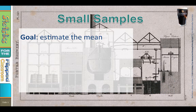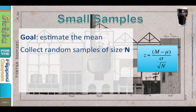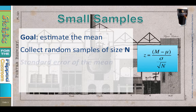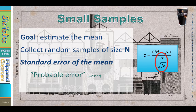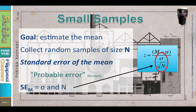Our goal is to estimate the mean. We're going to do this by collecting random samples, making sure that each sample is the same size. The mean of each sample is going to be off a little bit from its population mean. If we had plenty of time, we could measure thousands of samples, each of the same size, and then compute the typical amount that a sample mean is off from the population mean. This is called the standard error of the mean — what Gossett called the probable error. We want the standard error of the mean to be as small as reasonably possible.